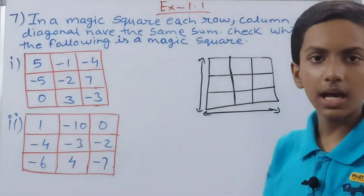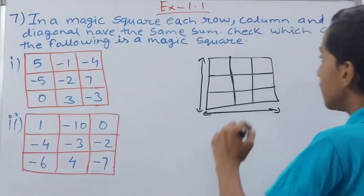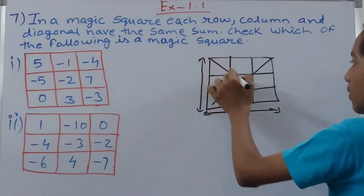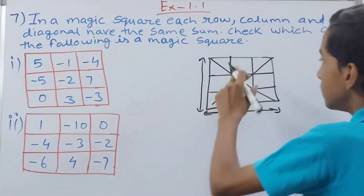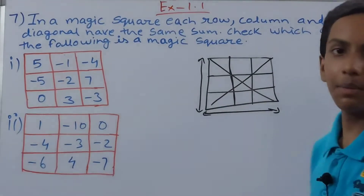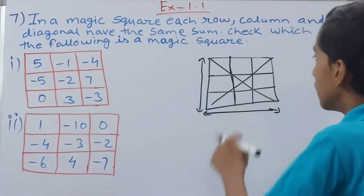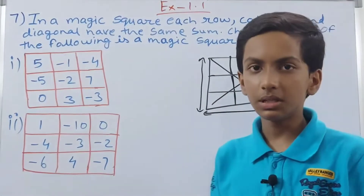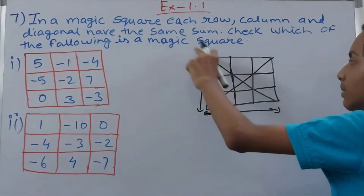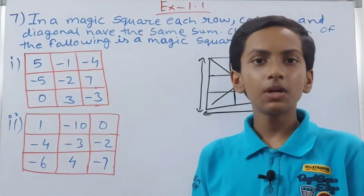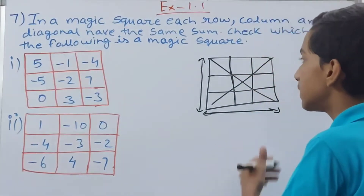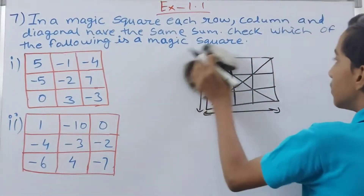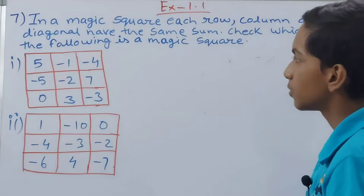The last condition is the diagonal. A diagonal goes from one corner to the opposite corner. There are two diagonals in the square. You add the three numbers along each diagonal and both must give the same sum. If any of these three conditions — rows, columns, or diagonals — is not fulfilled, then that square is not a magic square.